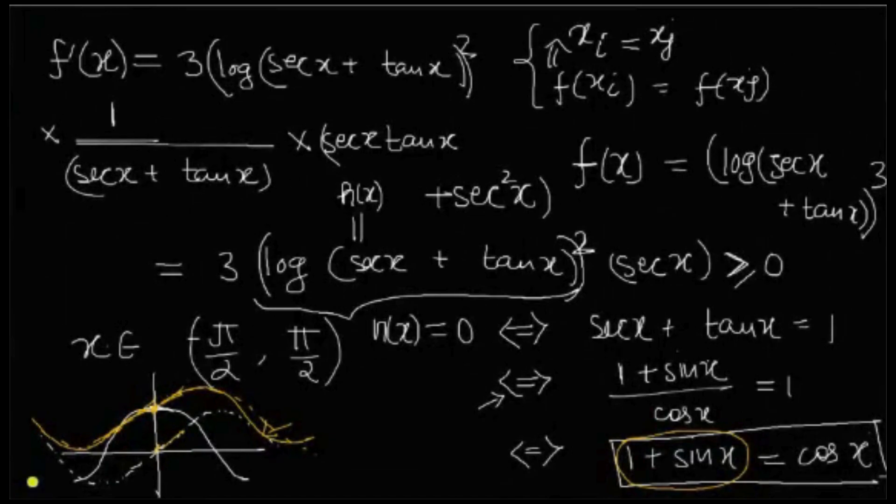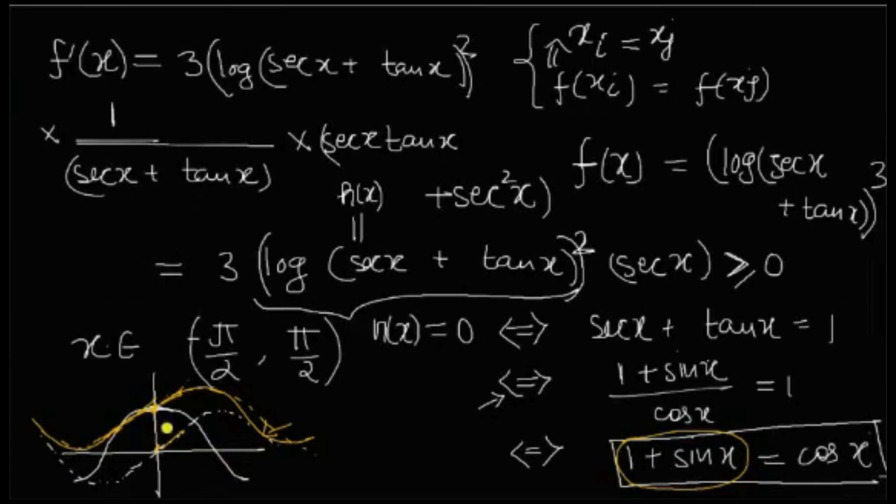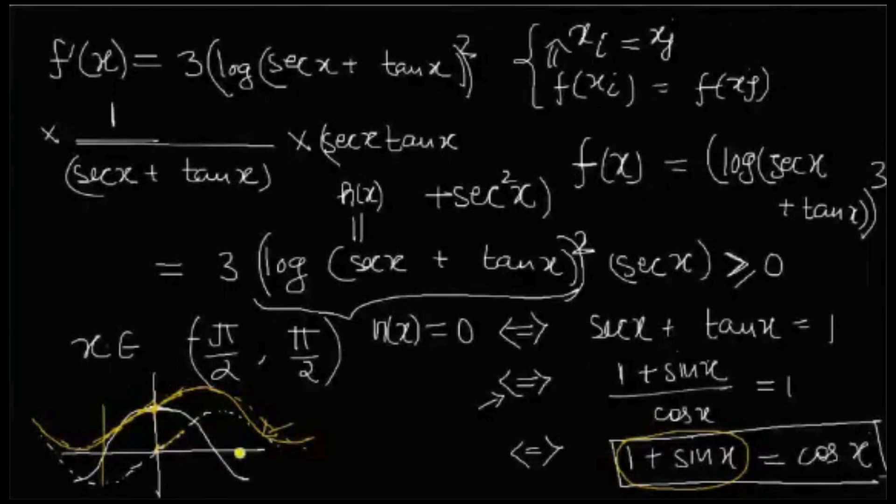Now if you see that, I mean, cos x will intersect. And this is minus pi by 2 here, and pi by 2 is here.